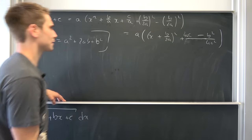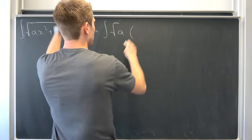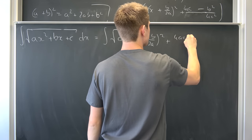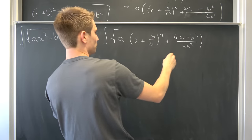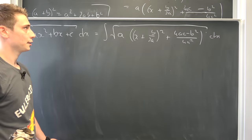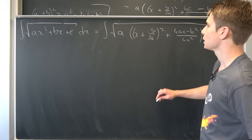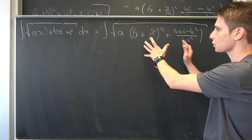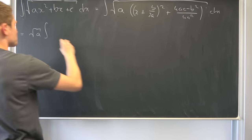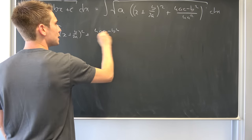So we've got this now and we can plug this into our integral. Then we have the square root of a times (x + b over 2a)² plus (4ac − b²) over 4a². Supposing this thing right here is positive, or at least one of those two are positive, then we can just break this up into square root of a times square root of this whole chunk, and bring this 'a' to the outside. So we end up with square root of a times the integral of the square root of [(x + b over 2a)² + (4ac − b²) over 4a²] dx.